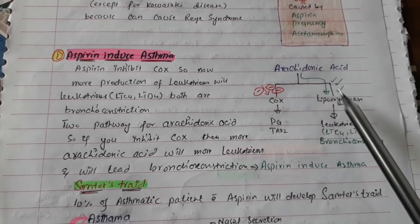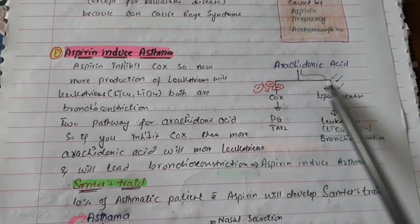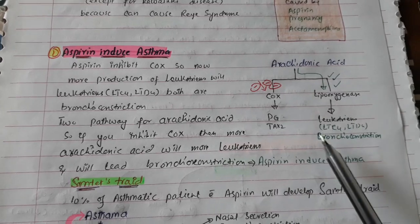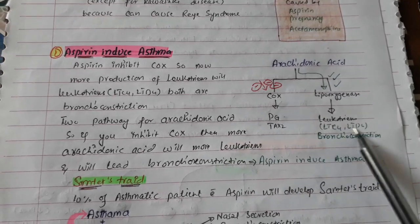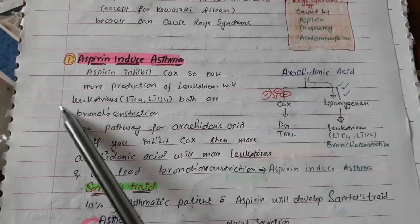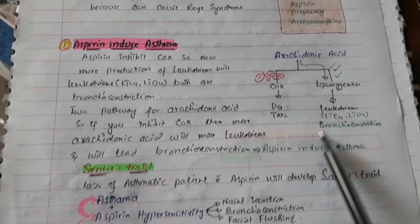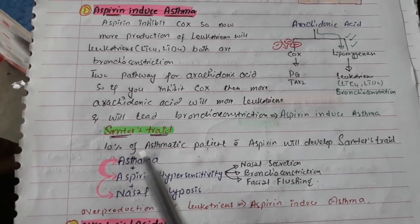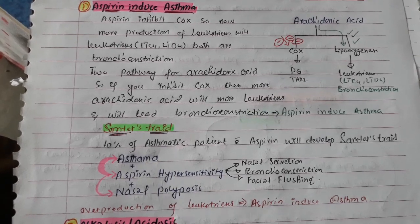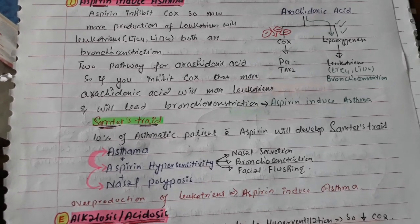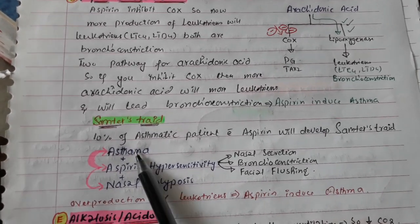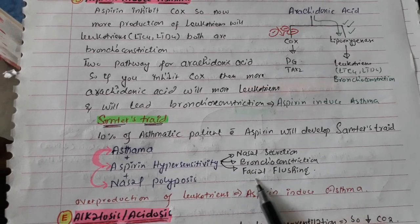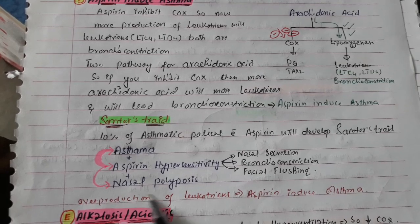When COX is inhibited, more arachidonic acid is shunted through the lipoxygenase pathway, meaning there is increased production of leukotrienes and therefore increased bronchoconstriction — that is why we say aspirin-induced asthma. About ten percent of asthmatic patients who take aspirin will develop this triad.